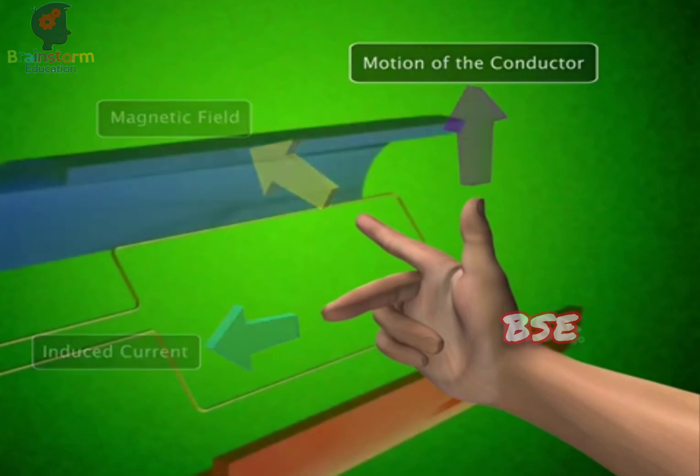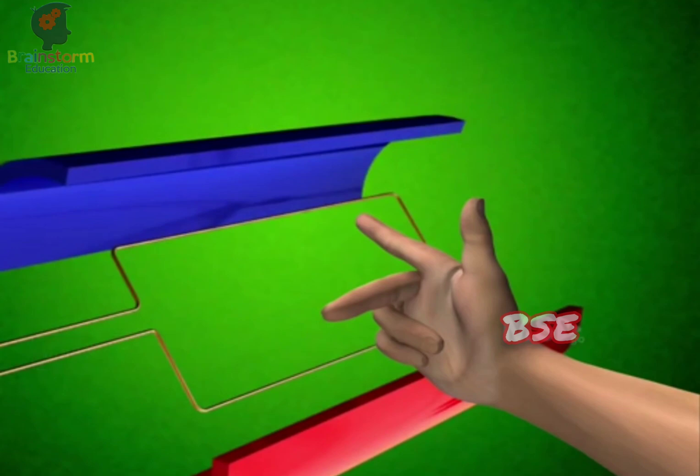Hold your right hand between the poles of the magnet within the generator in such a way that the index finger points in the direction of the magnetic field from the north pole to the south pole. The direction in which the second finger points is the direction in which the induced current flows. The thumb shows the direction in which the conductor moves.